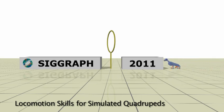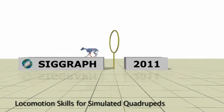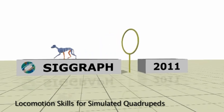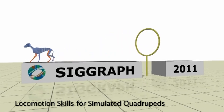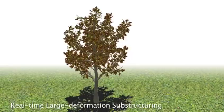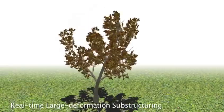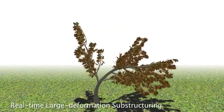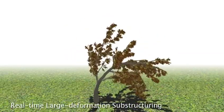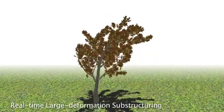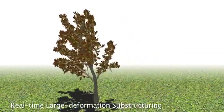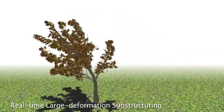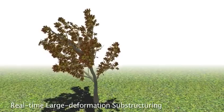For example, this paper develops a large integrated set of skills for physical simulations of dogs and other quadrupeds. This challenging oak tree simulation runs at an impressive 3 frames per second due to domain decomposition and instancing parts.